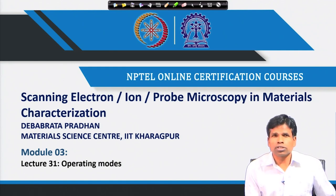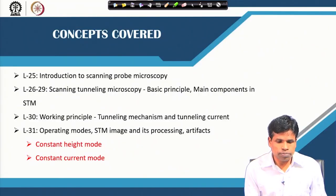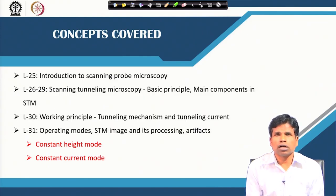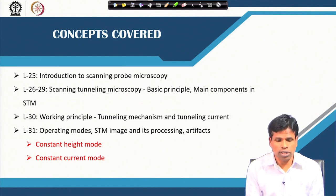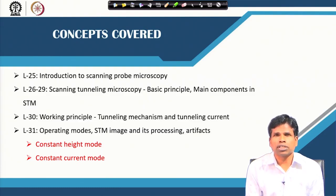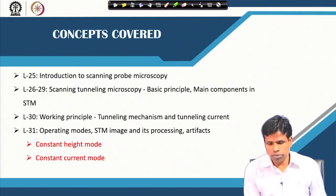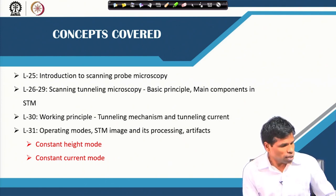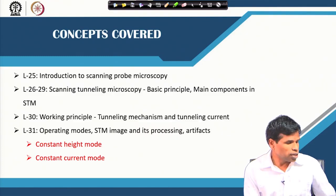There are a couple of operation modes — particularly constant height mode and constant current mode — and these two modes are normally used to get the surface image in the scanning tunneling microscope. In addition, I will show you what type of image is obtained in the STM and how the image is processed briefly. There can also be some artifacts, and how one can know the presence of artifacts in the image and how to get rid of those artifacts.